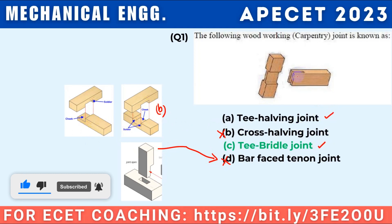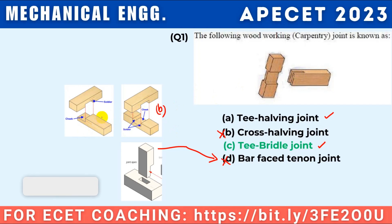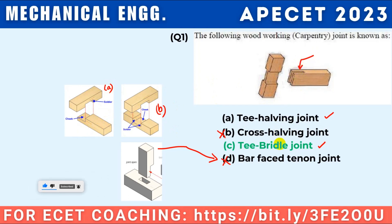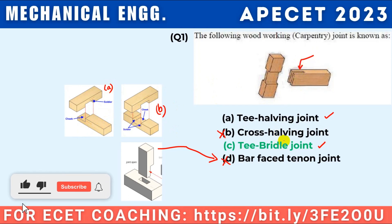T-halving joint and T-bridle joint. What are the two types of joints? This is T-halving joint and this is the bridle joint. T-bridle joint is the option.